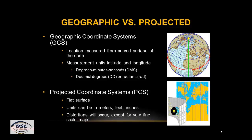A geographic coordinate system involves the curvature of the earth. It measures angular distance in degrees, minutes, and seconds. Locations are measured from the curved surface of the earth, with coordinate units of latitude and longitude. A projected coordinate system measures locations from a flat surface, with units of meters, feet, or inches.